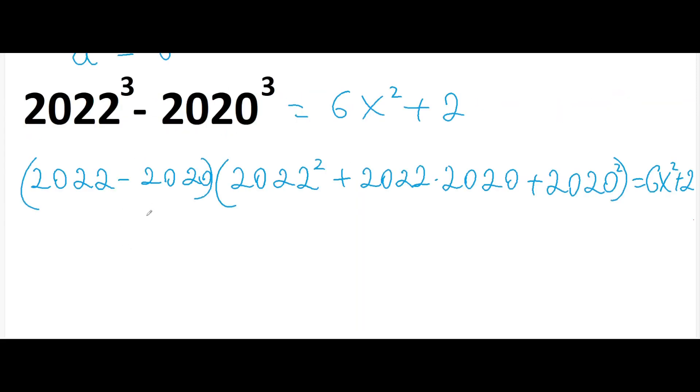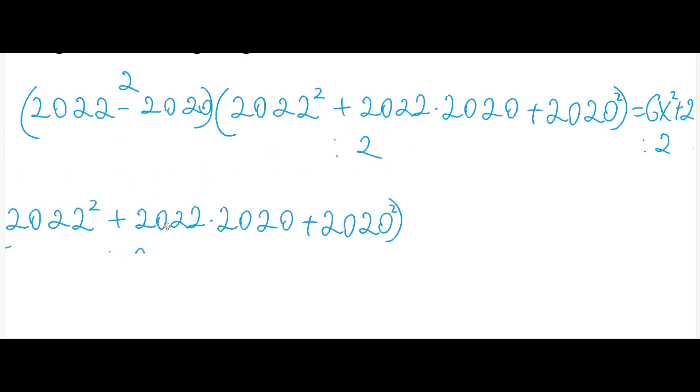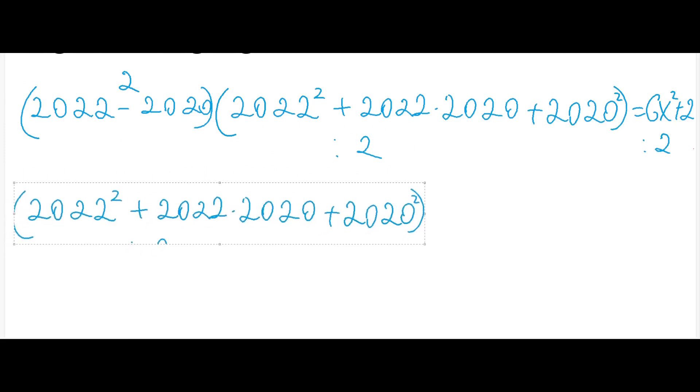Now we know that this is 2. And now we can divide both sides by 2. If we divide, we will get the first and the second brackets, the expression that is in the second bracket. And 2 and 2 will be cancelled. And on the right side, we will get 3x squared plus 1.